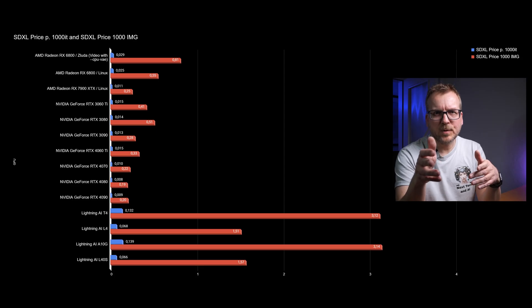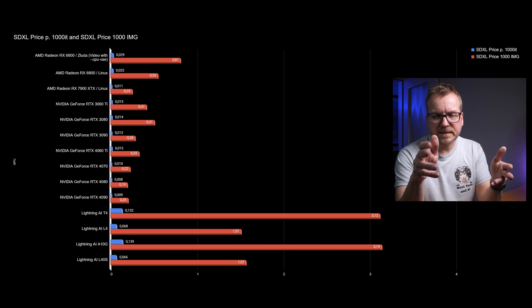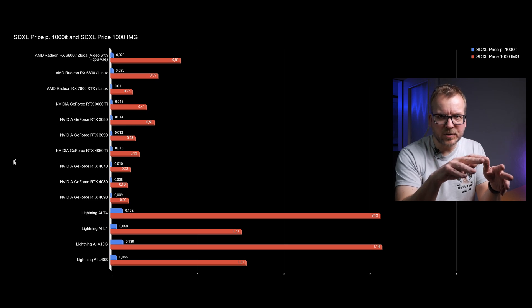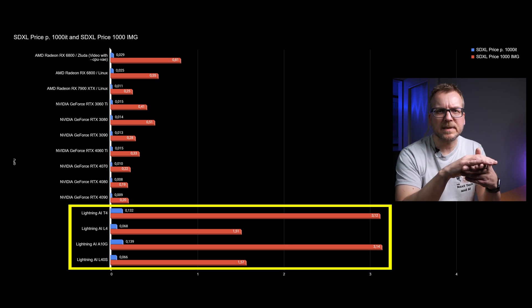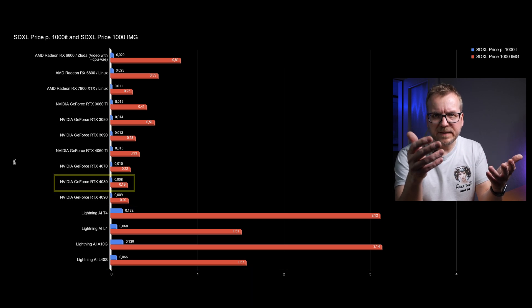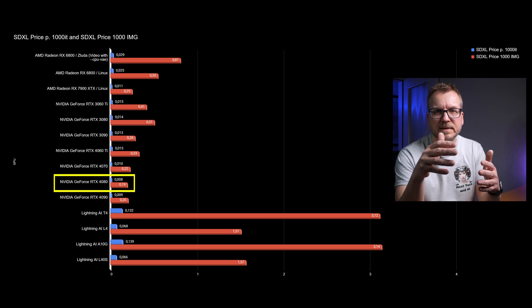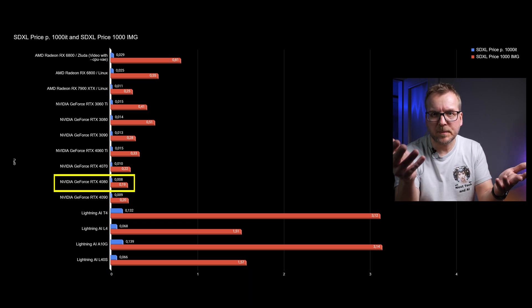We calculate the cost of each processing cycle, so you can see how much each generated image or video really costs. The following picture emerges in the ComfyUI benchmark — blue bars represent iteration prices. Let's look at the red prices for 1000 images. For image generation, at least with SDXL, cloud GPUs aren't worth it and the NVIDIA RTX 5080 offers the best price-performance ratio.